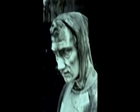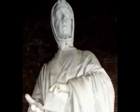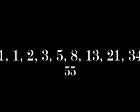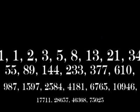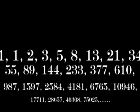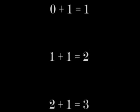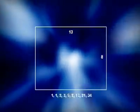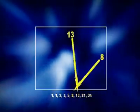Around 1200 AD, a man named Leonard Pisano, better known as Fibonacci, discovered a sequence of numbers that created a very interesting pattern. The sequence begins with the numbers 1, 1, 2, 3, 5, 8, 13, 21, 34, and continues indefinitely. Each number is obtained by adding the last two digits together.